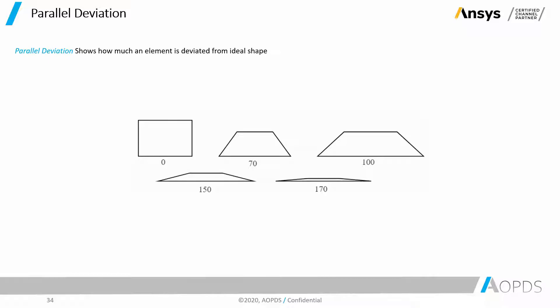Here we have a quad element. Parallel deviation for this perfect quad element is zero. If this perfect quad starts deviating, the edges start deviating, then the parallel deviation is not zero anymore. The more deviated an element is, the less quality based on parallel deviation it will have.